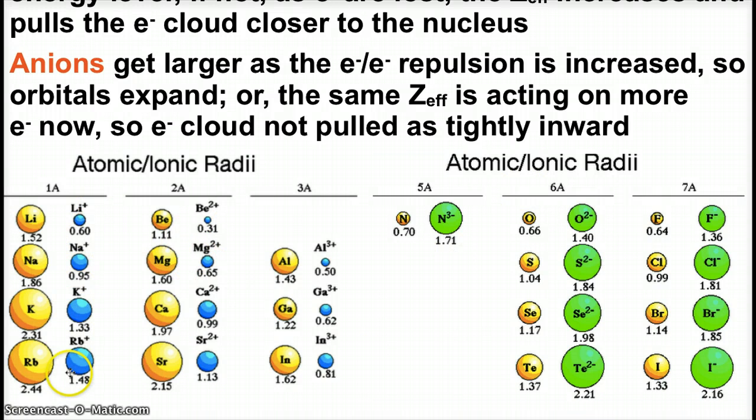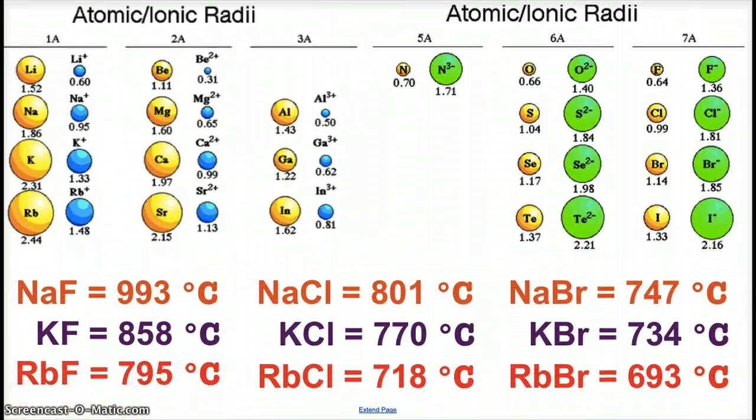Here you see some visual representations of our ionic radii. You see that all the blue positive cations are smaller than the yellow atoms they used to be before losing electrons. All the green anions are larger than the yellow atoms they were before gaining electrons.